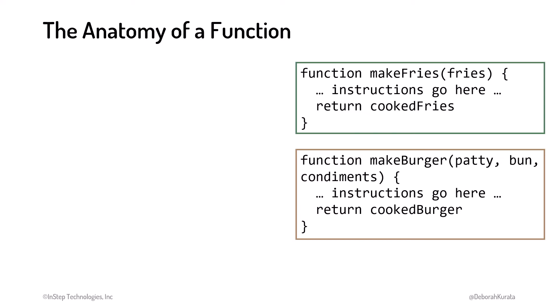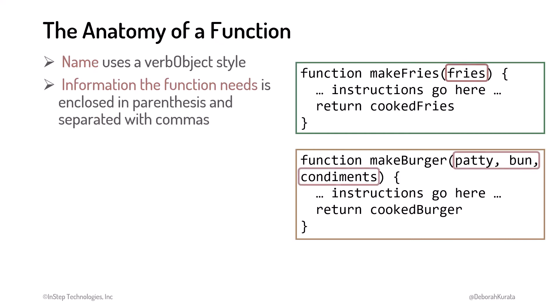Functions are often named with the task they perform following a verb-object style naming convention, like make fries and make burger. The name is followed by a list of the information that the function needs. In this example, this information is enclosed in parentheses and separated with commas. For our make fries, we need the fries. And for the burger, we need a patty, bun, and condiments.